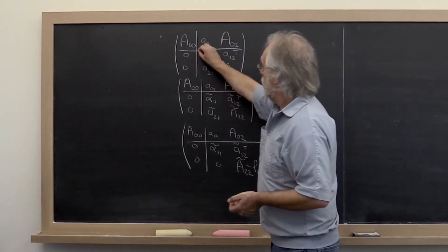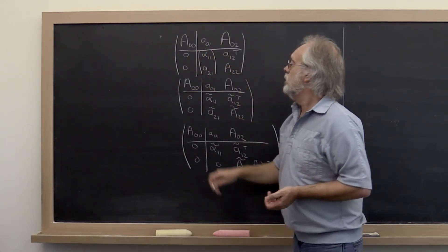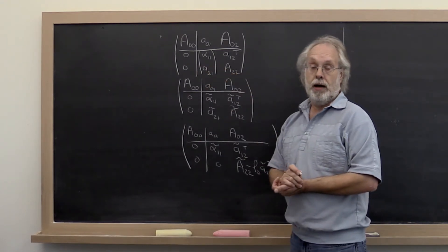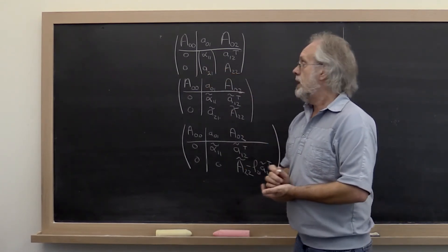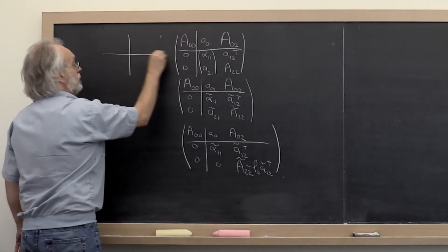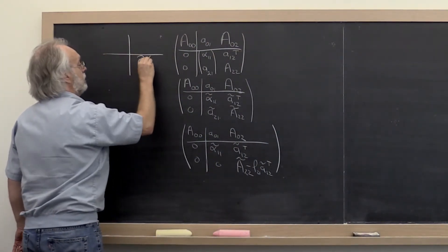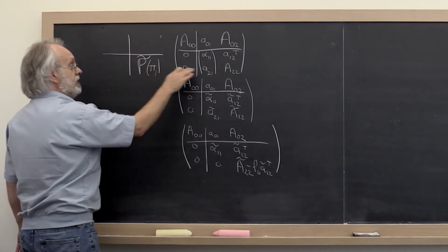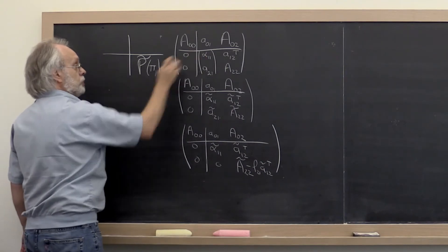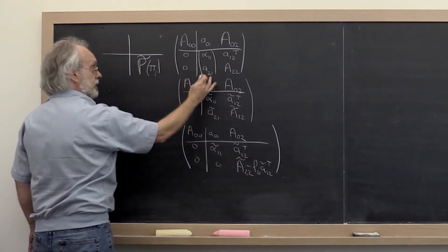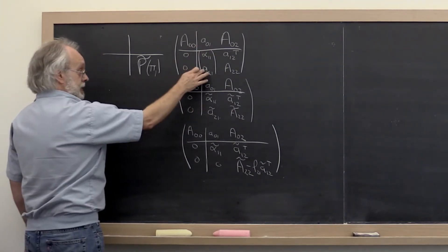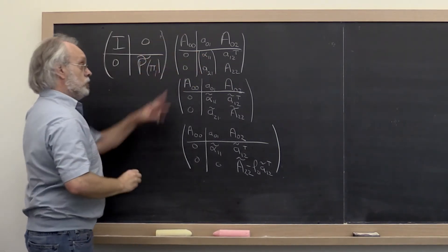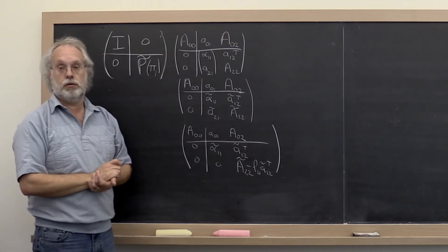You look at this vector right here, figure out what the entry is of maximal magnitude and what the index is, and then you use that to pivot this matrix. If we say pi_1 is the index of the entry of maximal magnitude relative to the first entry in this vector, then this matrix will swap the appropriate rows.